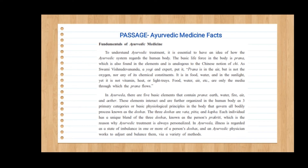These elements interact and are further organized in the human body as three primary categories — the basic physiological principles in the body that govern all bodily processes, known as the dosha. The three doshas are Vata, Pitta, and Kapha. Each individual has a unique blend of the three doshas known as the person's prakriti, which is why Ayurvedic treatment is always personalized. In Ayurveda, illness is regarded as a state of imbalance in one or more of a person's doshas, and an Ayurvedic physician works to adjust and balance them via a variety of methods.